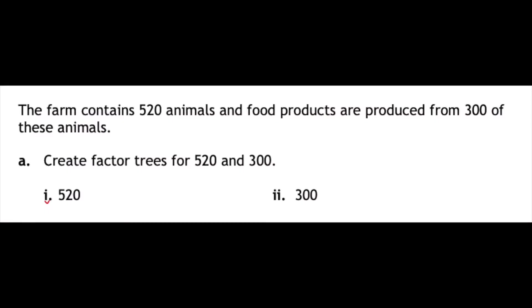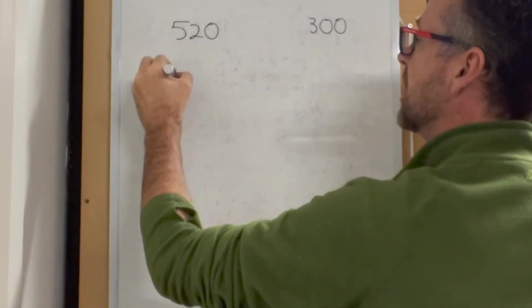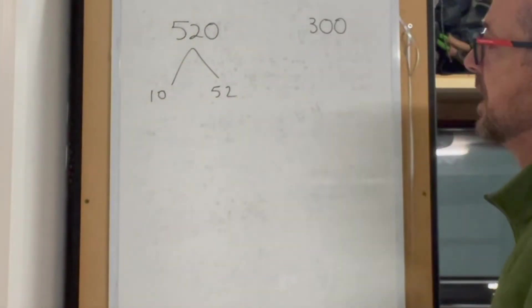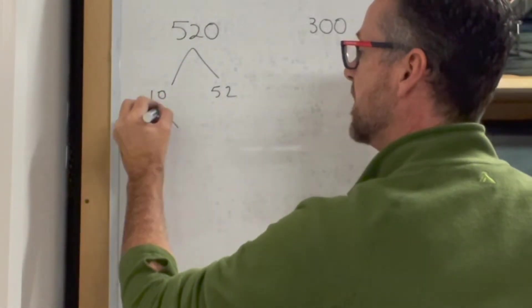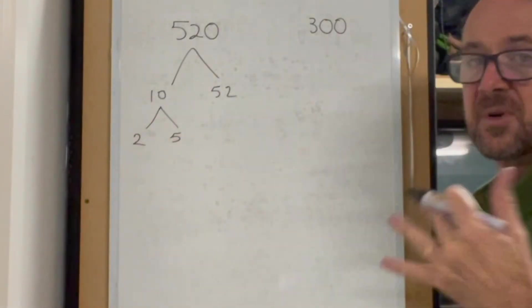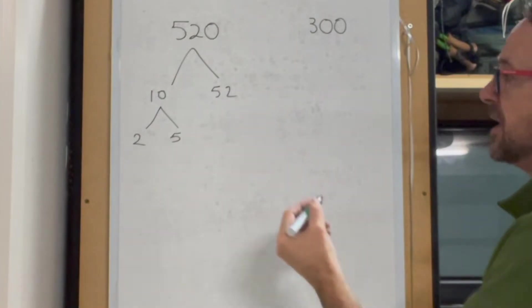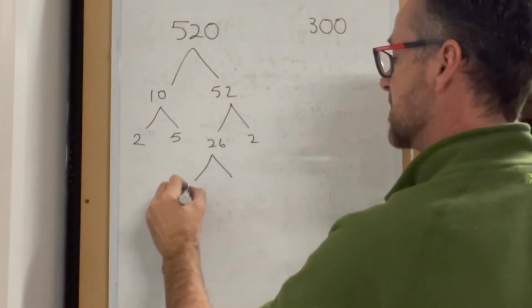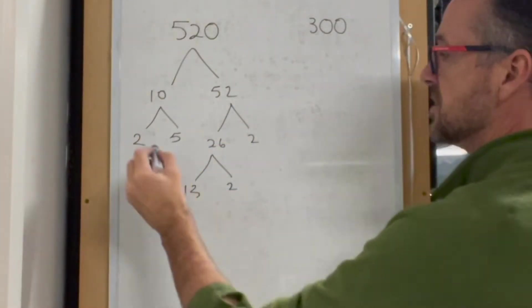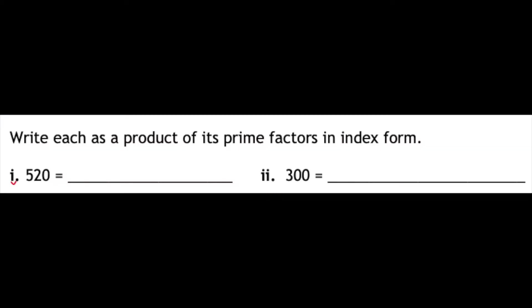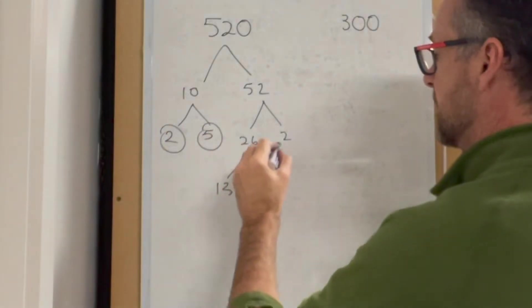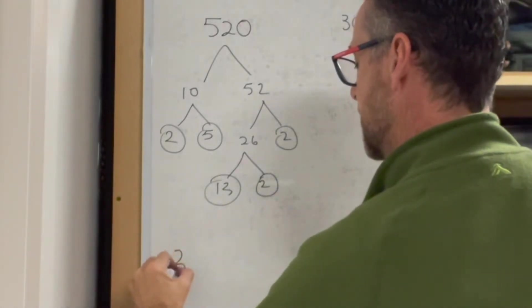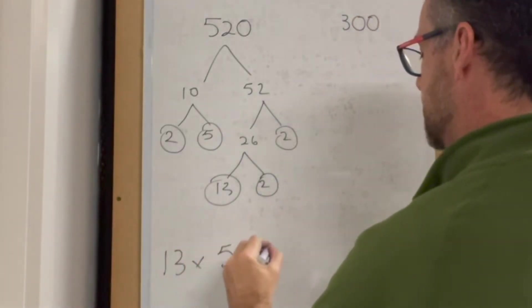Now we're looking at factor trees for 520 and 300. A good way to start would be 10 and 52, because 10 times 52 is easy, and the 10 splits into 2 and 5. Then split 52 as 26 and 2, and 26 as 13 and 2. We end up with 2, 5, 2, 2, and 13, which gives us 13 multiplied by 5 multiplied by 2 cubed.